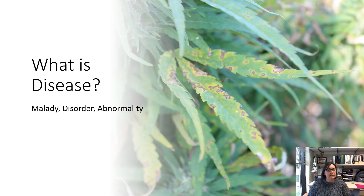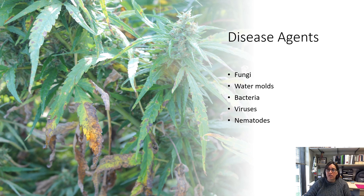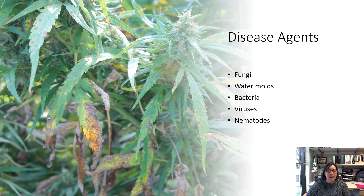What is disease? The definition of disease is a malady, a disorder, or an abnormality. We use the word loosely in everyday life, but in plant pathology we use it very differently. In plant pathology or the agricultural and horticultural world, disease is an abnormality caused by a disease agent — the microscopic pathogens that cause the plant to become diseased. Your typical disease agents are fungi, water molds, bacteria, viruses, and nematodes.